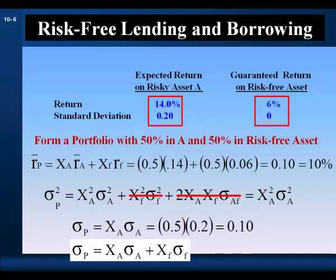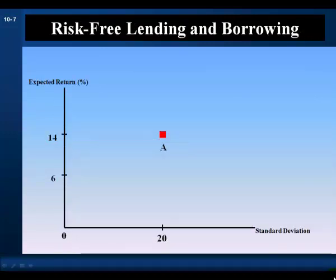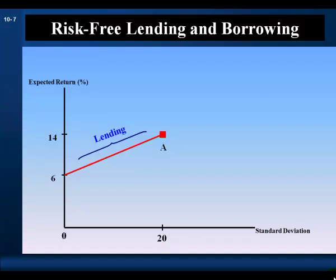The portfolio standard deviation is a simple weighted average of the standard deviation of the risky security and the risk-free asset, where the standard deviation of the risk-free asset is zero. Therefore, the risk and return combinations are found on a straight line running from the risk-free asset through the risky asset. This is lending or investing in the risk-free asset, because it's a present cash outflow and a future cash inflow.